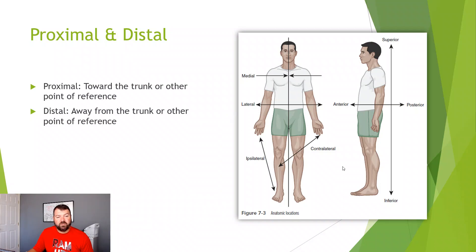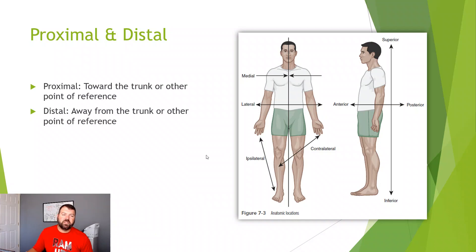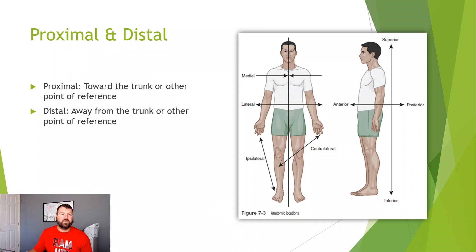Proximal and distal — for example, my elbow is proximal to my thumb, and my thumb is distal to my elbow.